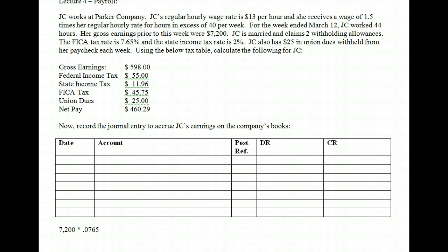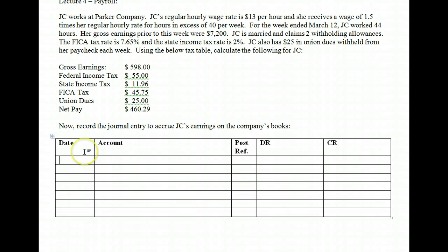That's the amount we would actually write the check to our employee for — the amount the employee would take home: $460.29. Now how would we record this as an employer? The recording is straightforward. We'll just say the date is A since we don't know the physical pay date. From the company's standpoint, this is wages expense — an expense to us. The full $598 represents total wages; that's the amount we actually owe our employee.